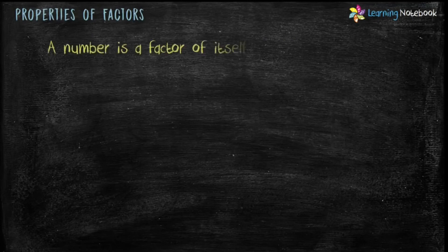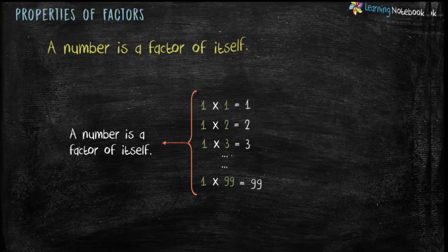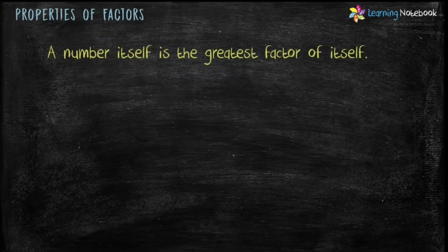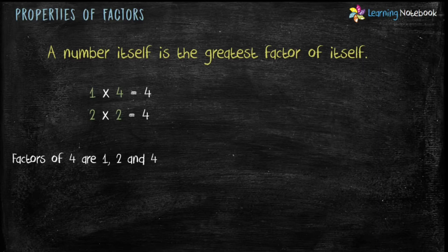The next property is: a number is a factor of itself, because every number divides itself completely. The 4th property is: a number itself is the greatest factor of itself. To understand this property, let's see the factors of 4. Factors of 4 are 1, 2, and 4. We will learn how to find factors of a number in a short while.